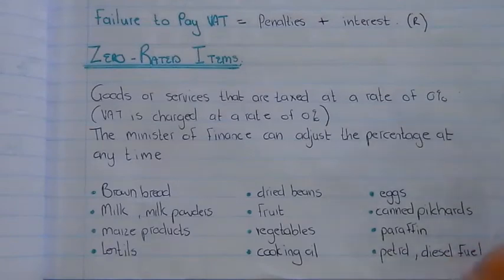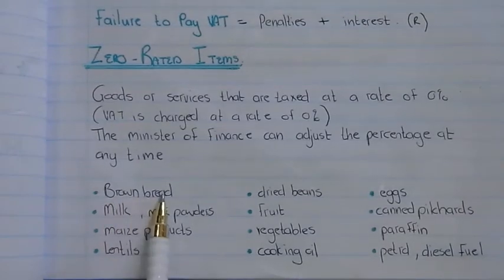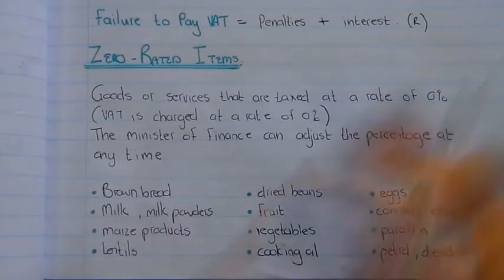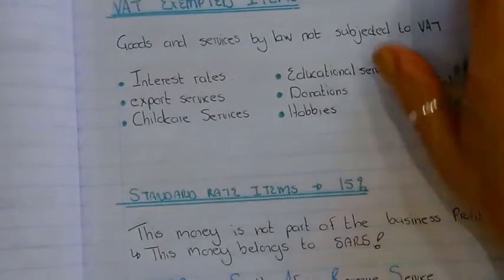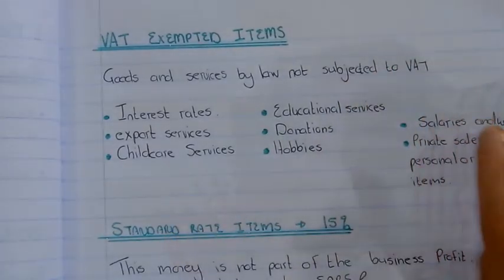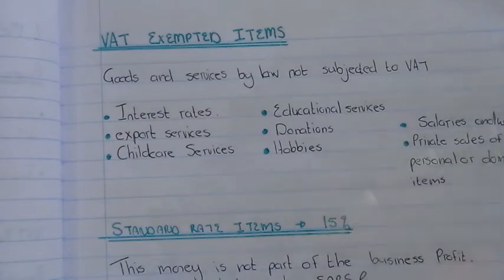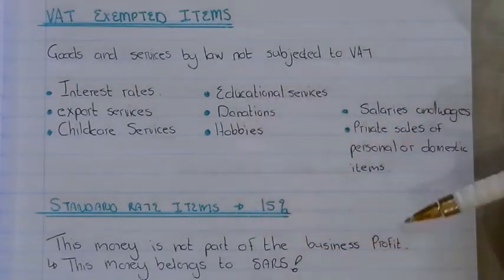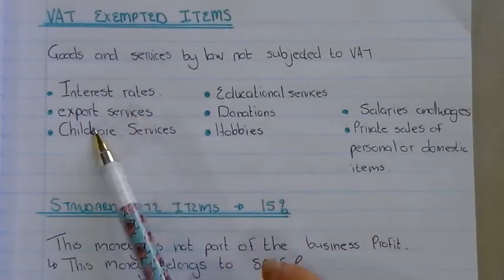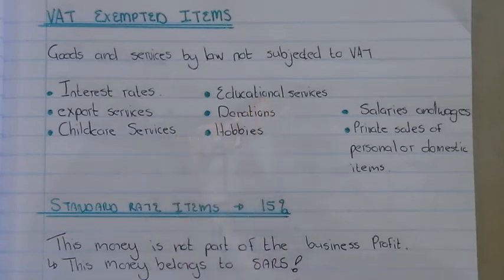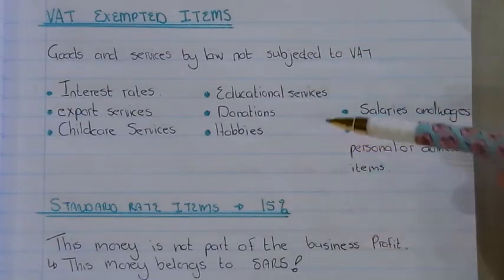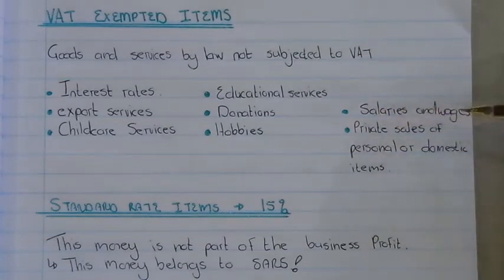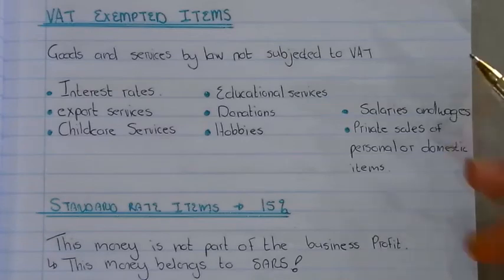When referring to bread, it is brown bread and white bread in its purest form — no fancy varieties. VAT-exempt items are goods and services that by law are not subjected to VAT. These are mostly items that already have another type of tax charged on them. Examples include interest, export services, childcare services, educational services, donations, hobby sales, salaries and wages, and private sales of personal or domestic items.